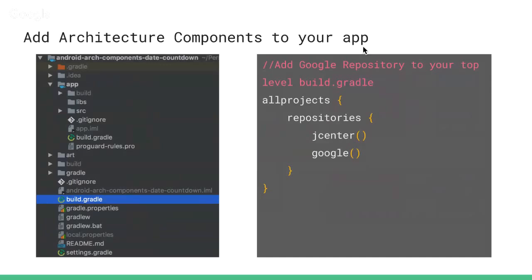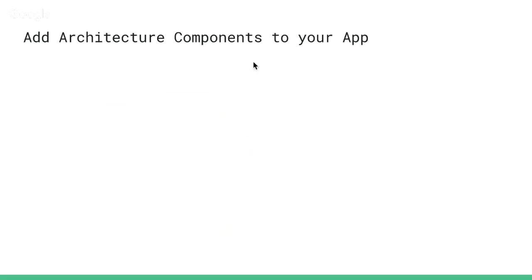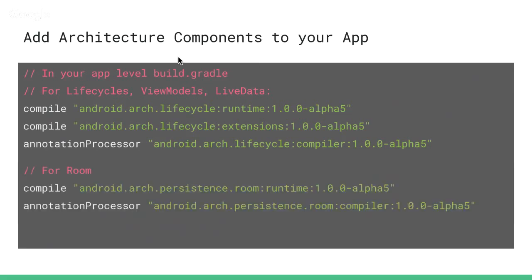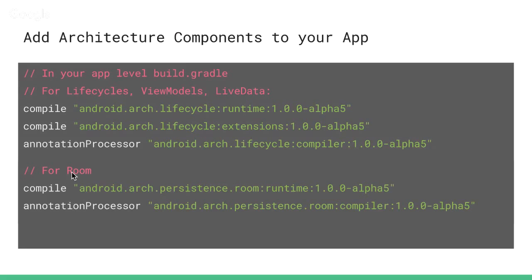To add these architecture components, first go to your top-level build.gradle and include the Google Maven dependency as a repository. Then in your app-level build.gradle, add the dependencies you need. For lifecycles, ViewModels, and LiveData you'll need three dependencies — currently at alpha 5, but new versions ship frequently so keep updating. If you also want Room, add the Room dependency and the Room annotation processor.